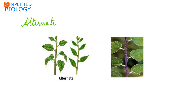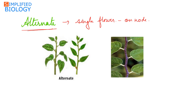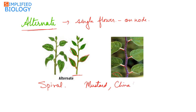First, alternate phyllotaxy. In alternate phyllotaxy, a single leaf develops at the node, and the other leaves develop alternate to it. This is also referred to as spiral phyllotaxy. In both figures, we can see a single leaf developing at a node and the other leaf developing alternate to it. This phyllotaxy can be seen in mustard, china rose, and sunflower.